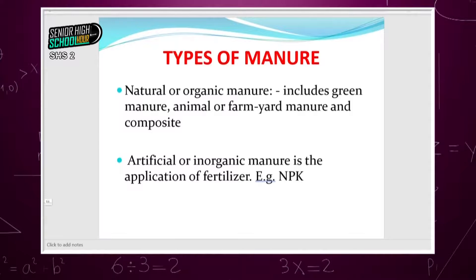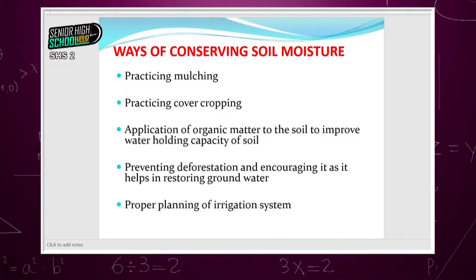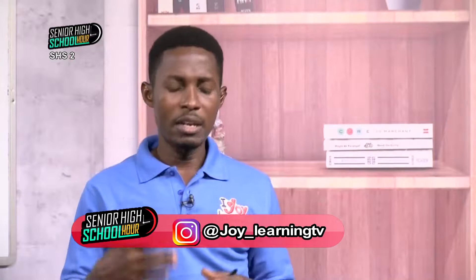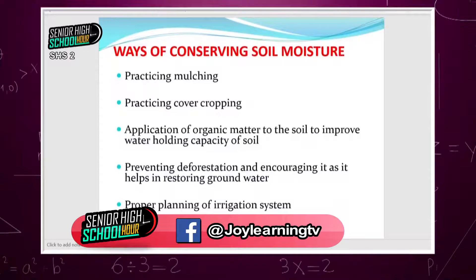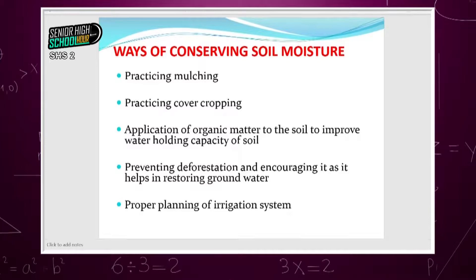To summarize the means of conserving soil moisture: cover cropping, mulching, and organic manuring all help increase soil structure so that it can retain water. Also, prevent deforestation and encourage afforestation so that water is reserved in the groundwater. Use proper irrigation methods — giving too much extra water can actually cause loss of the little moisture remaining.